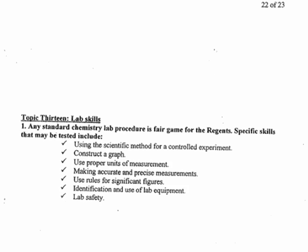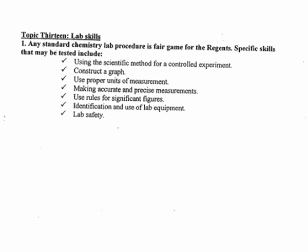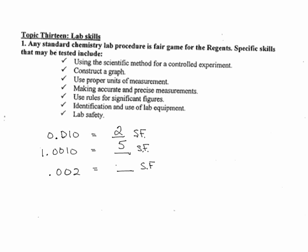The last unit is Topic 13: Lab Skills. We'll cover these in class over the next few weeks. Let's do a couple of quick significant figures. For 0.010 — how many sig figs? For 1.0010? For 1.006 and 0.002? Everything to the right of the last non-zero number counts, even if it's a zero. So 0.010 has two, 1.0010 has five, and 0.002 has one sig fig.